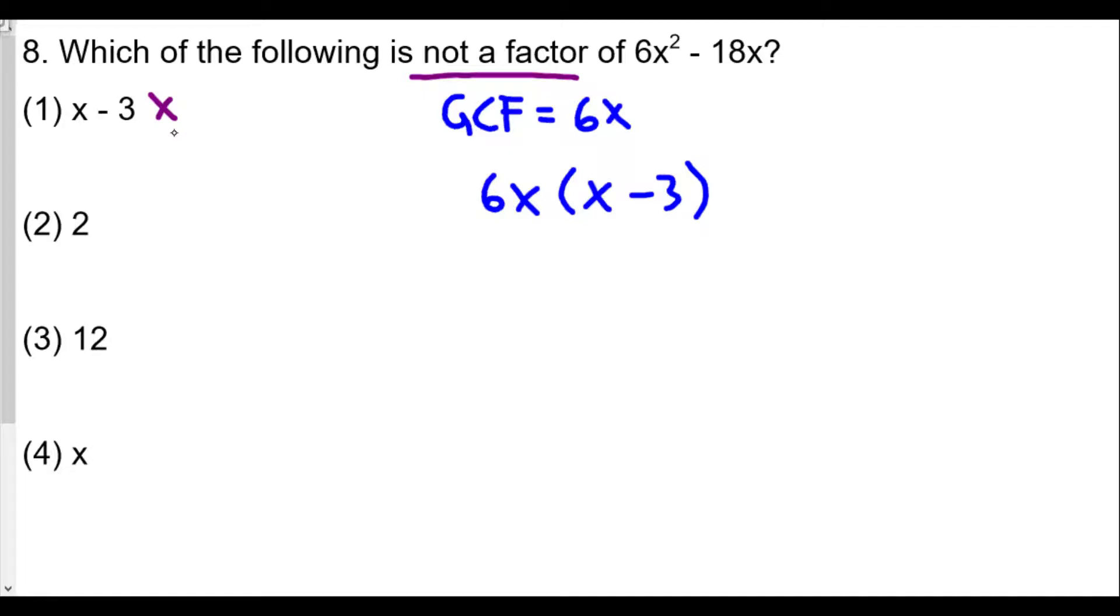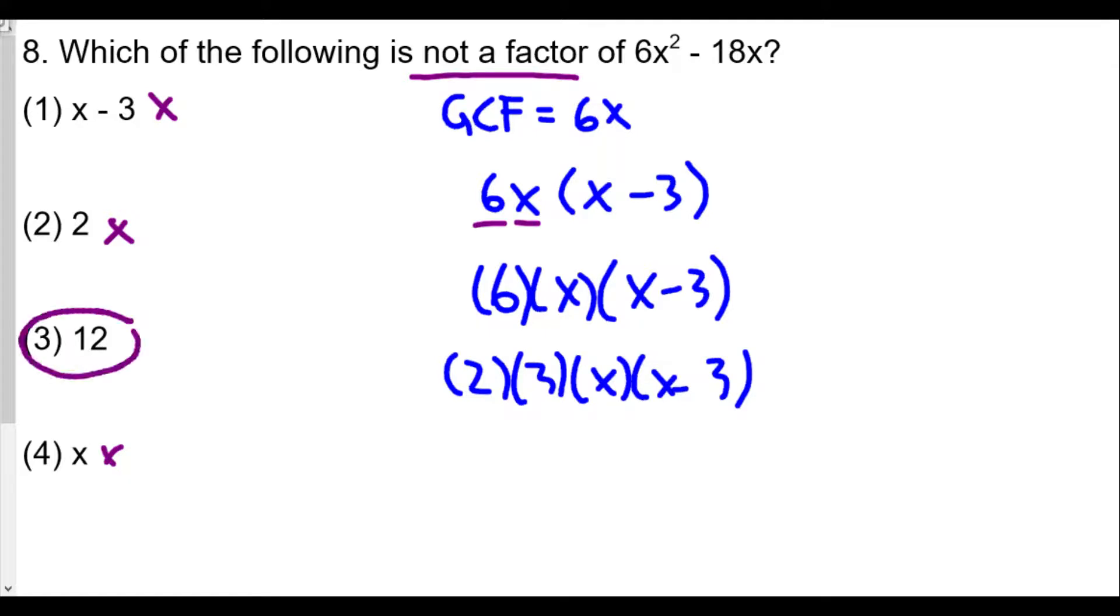Then we see 2. 2 does divide evenly into 6. A factor is something that can be divided evenly into another expression. 2 can divide evenly into both 6x² and 18x, so it can't be this one. And because we have a factor here of x, x is also a factor. When we break it down further it's the same as 2 times 3 times x times (x - 3). Therefore the one that's not a factor is 12, because 12 will not divide evenly into 6x² - 18x.